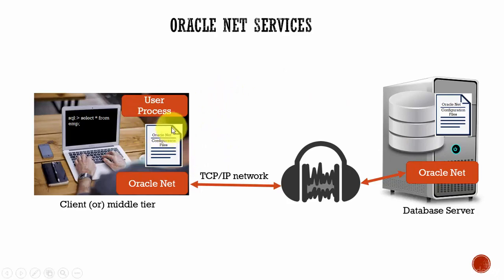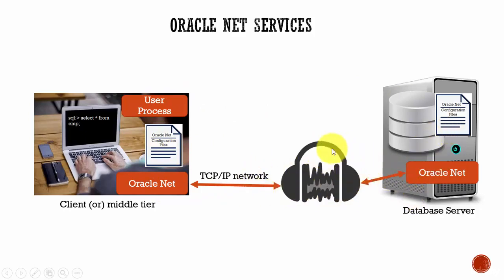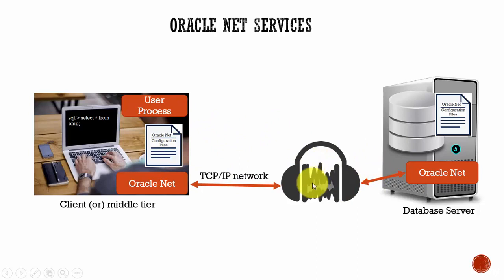Whenever a user requests a connection to a database service, this process goes through the Oracle Net service, goes through the network, and at the database server there will be a listener. This listener is a process running on behalf of the Oracle Net service. As soon as the request comes from the client, this listener takes a look at the request, validates the request, and if it is authorized, then it establishes a connection between the client machine and the database server.